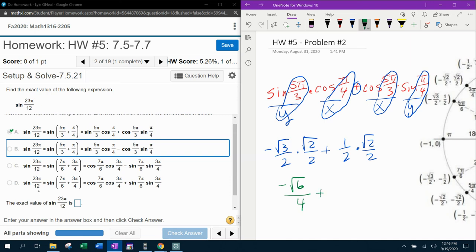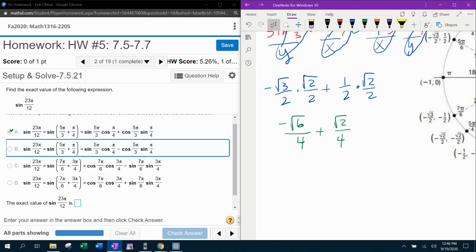Plus 1 times square root of 2 is square root of 2. 2 times 2 is 4. These fractions do have a common denominator. And so I can put them together and say negative square root of 6 plus square root of 2, all over 4.